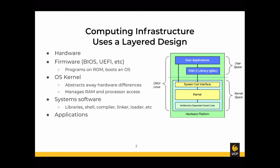The next layer up is the operating system kernel. The kernel defines a set of functions in a well-defined interface that application software can use. This interface abstracts away differences in the hardware — whether you've got 8 gigs of RAM or 512 megs, or whether you're using an ARM or x86 processor, the OS kernel makes these hardware distinctions largely invisible to application software.